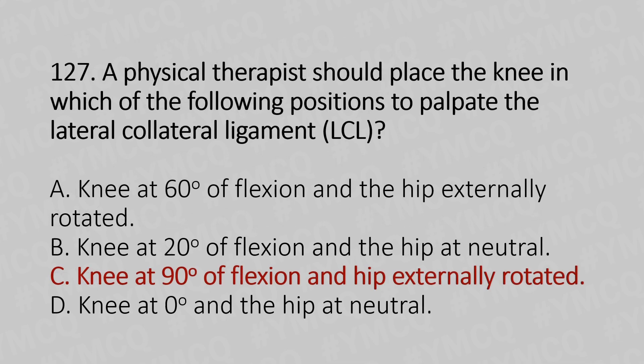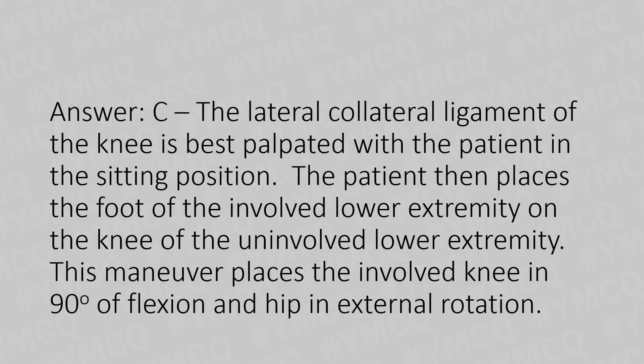The answer is Option C: knee at 90 degrees of flexion and hip externally rotated. Explanation: The lateral collateral ligament of the knee is best palpated with the patient in the sitting position. The patient places the foot of the involved lower extremity on the knee of the uninvolved lower extremity. This manoeuvre places the knee in 90 degrees of flexion and the hip in external rotation.